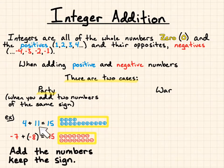So 4 plus 11 gave me 15, 7 plus 8 gave me 15, but I kept the negative in there.